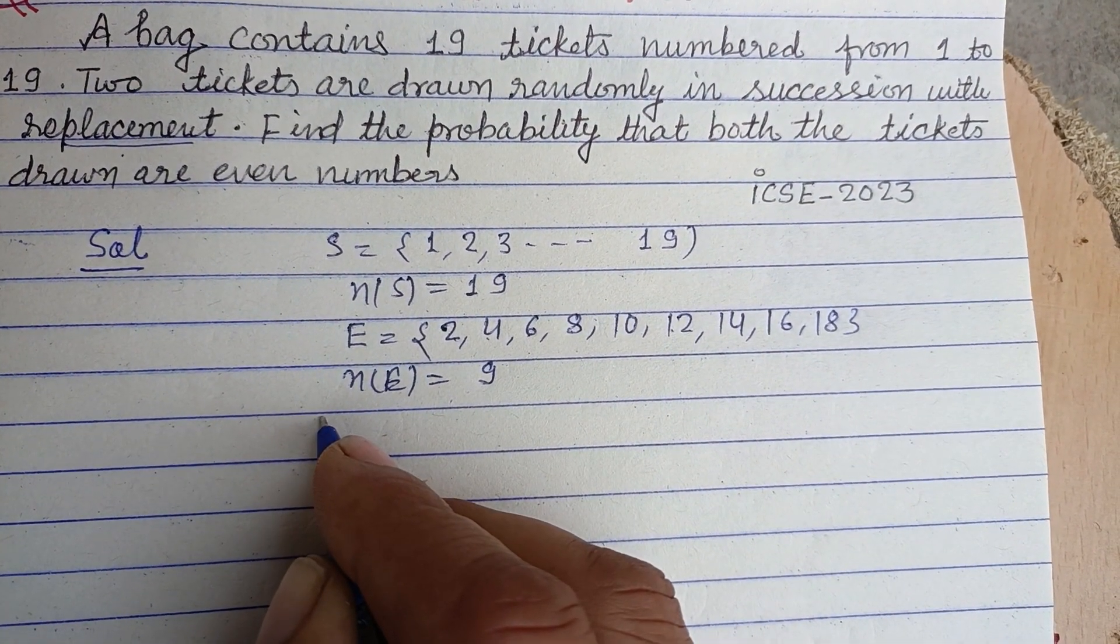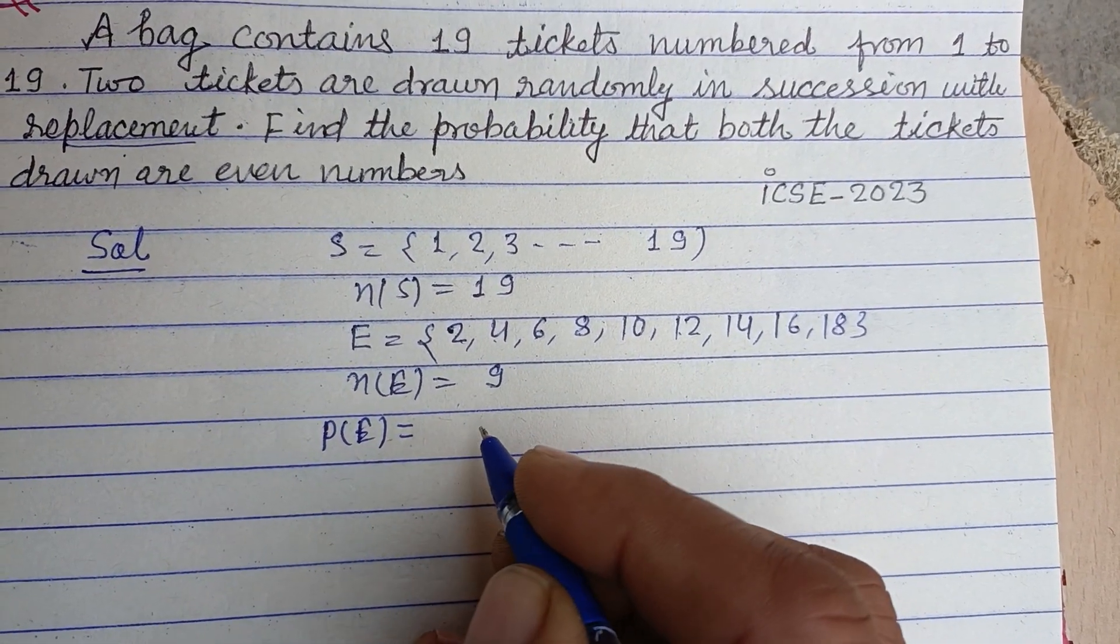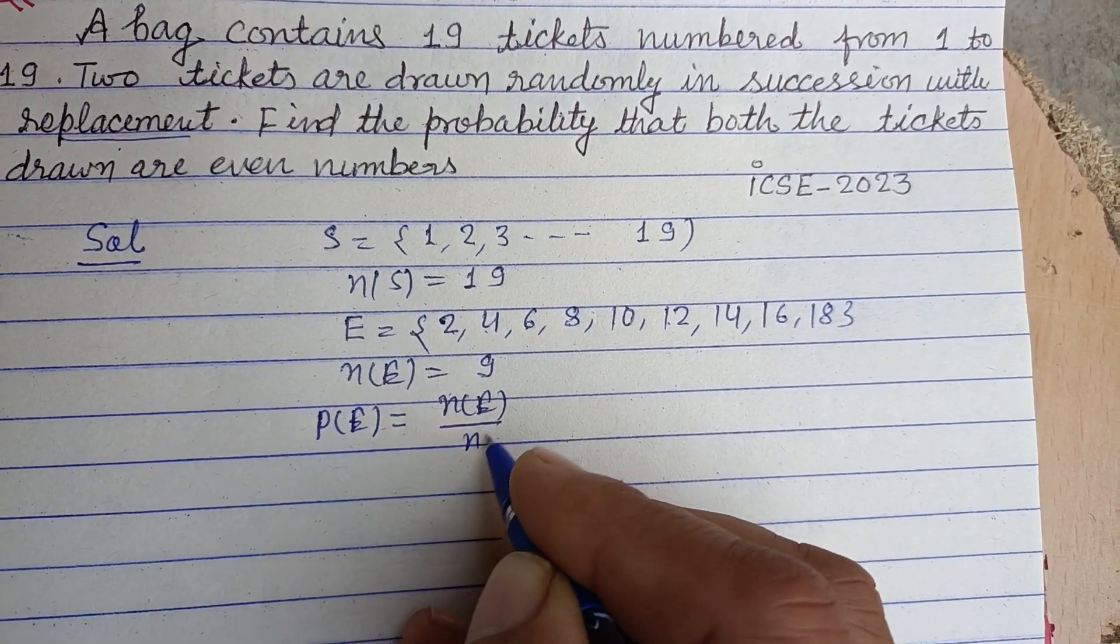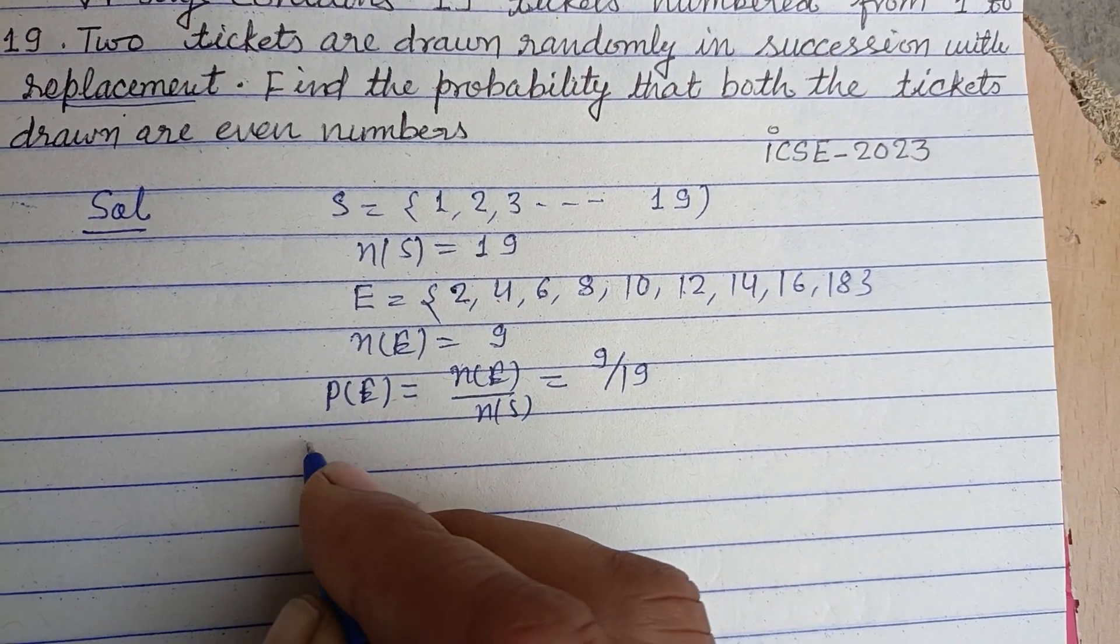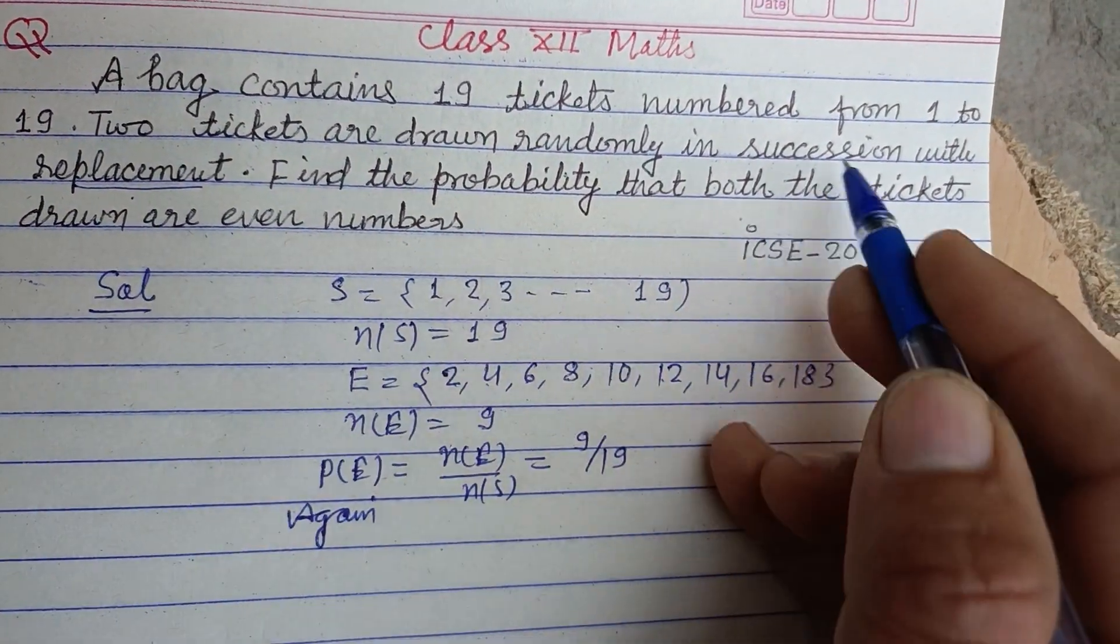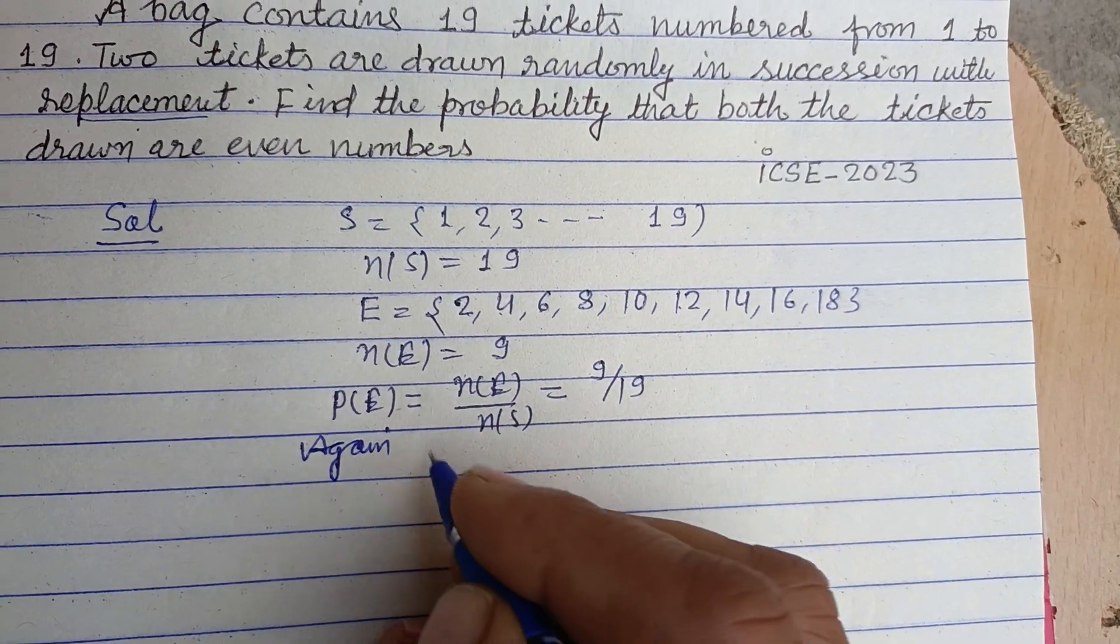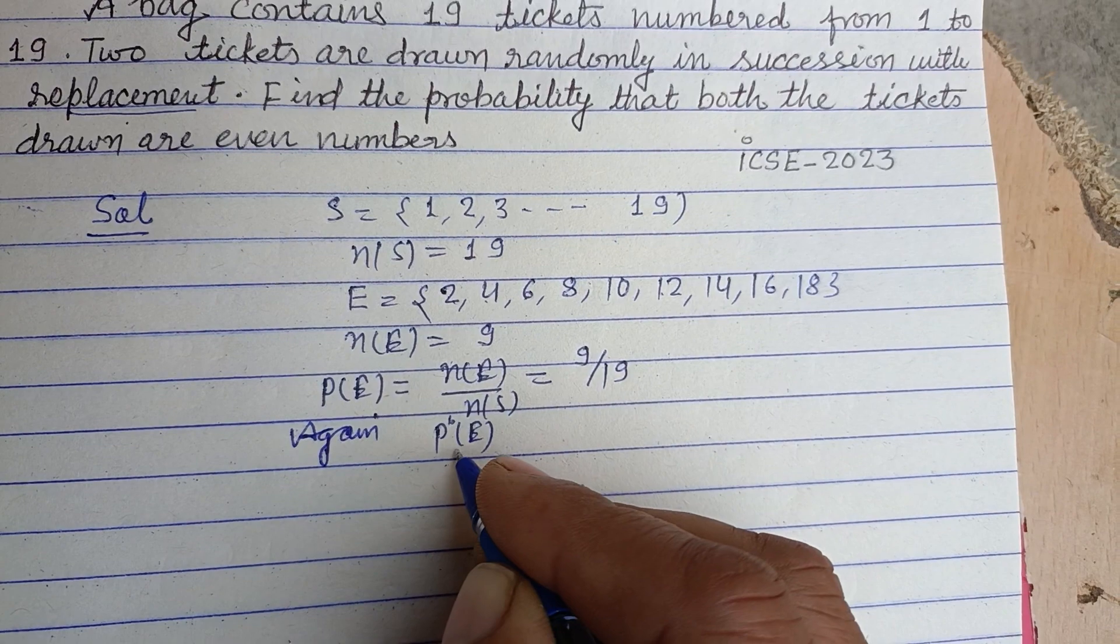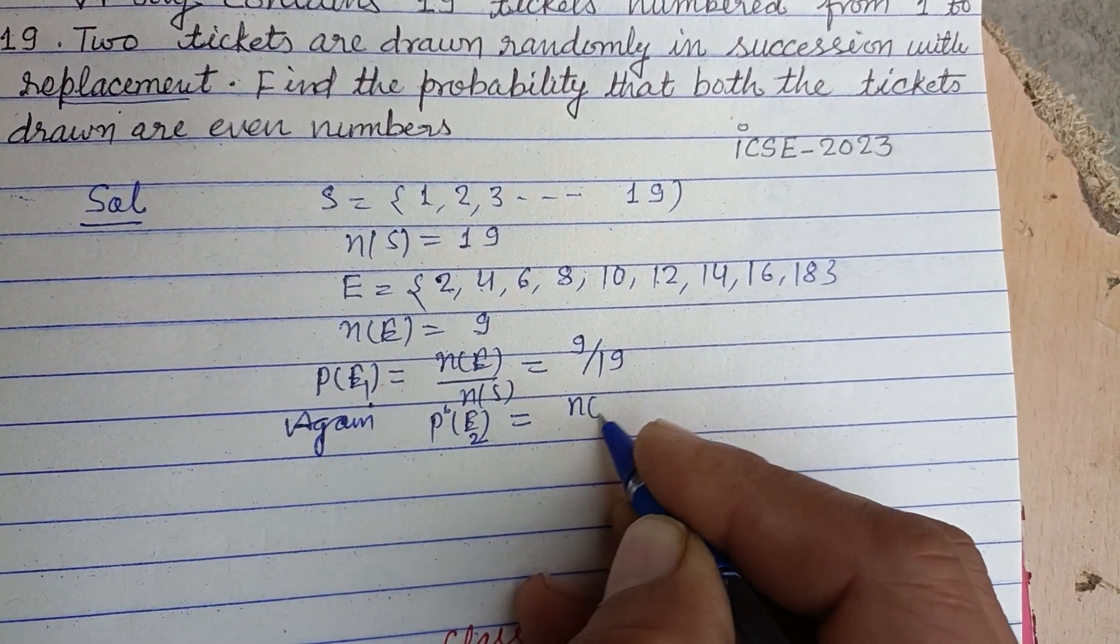When we draw the first ticket, the probability of drawing an even ticket is n(E) over n(S), so this is 9/19. Again, because of replacement, let this be E2. This is also n(E) over n(S), so 9 upon 19.